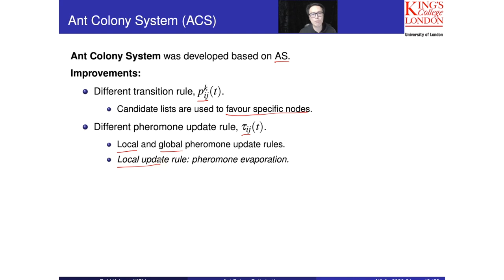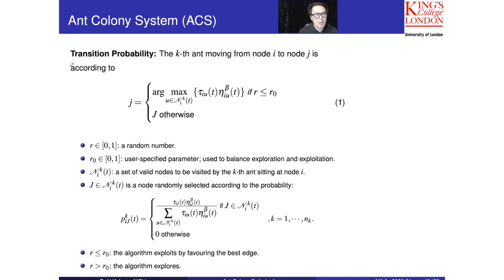When we refer to the local update rule, that is exactly the same as the pheromone evaporation rule we used before. For the global update rule, the difference compared with the previous two systems is that the global update rule will only be applied to the best solution only — the best ant. Now we talk about the transition probability. In general, the workflow is more or less the same as the previous system. We have a population of ants, and for each ant we find the complete path, requiring a transition probability going from one node to another node.